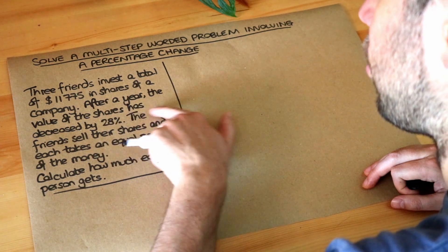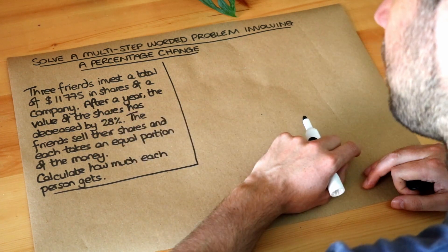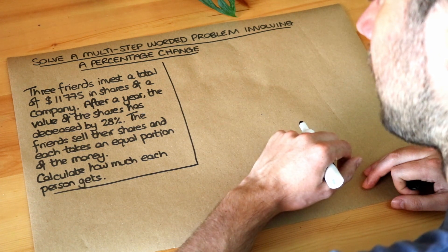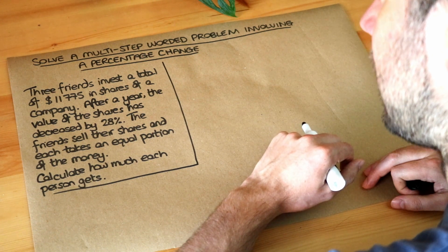After a year, the value of the shares has decreased by 28%. The friends sell their shares and each take an equal portion of the money. Calculate how much each person gets.